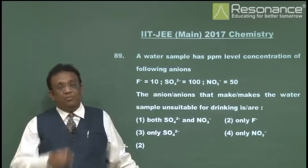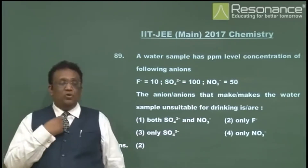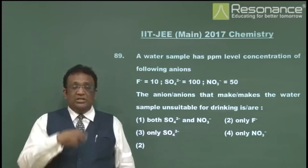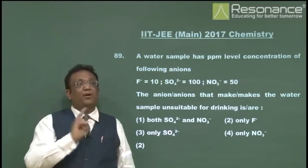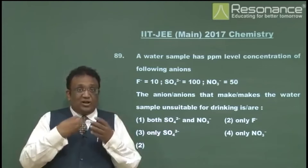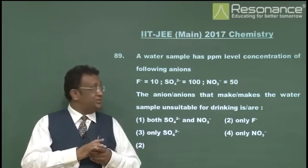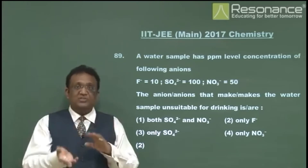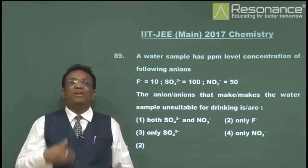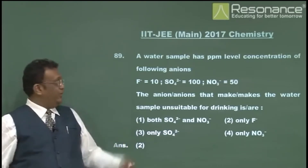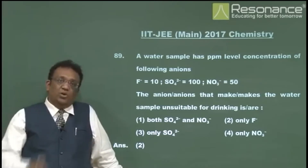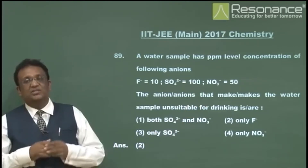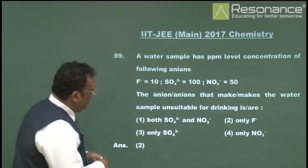Fluoride is more problematic: sulfates and nitrates of cations found in human blood are water soluble, but fluoride can precipitate as calcium fluoride or magnesium fluoride in blood vessels. Additionally, fluoride is toxic by other mechanisms. The toxicity limit of fluoride is only 1 ppm, so at 10 ppm it far exceeds the safe limit. The answer is fluoride only.